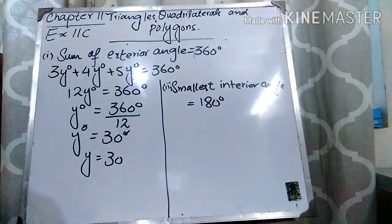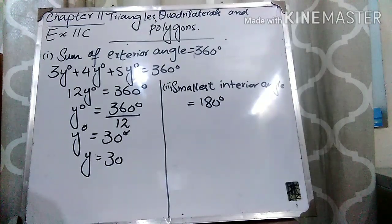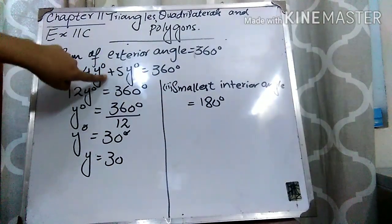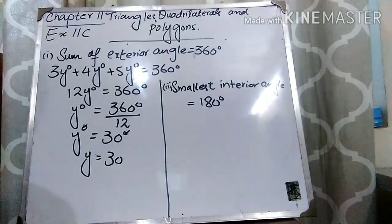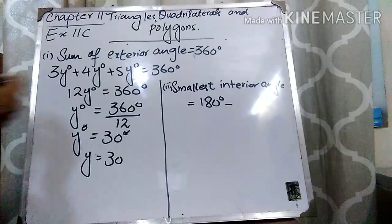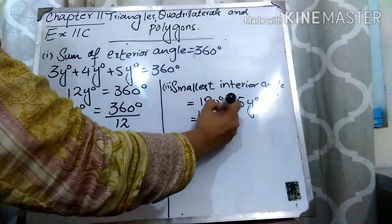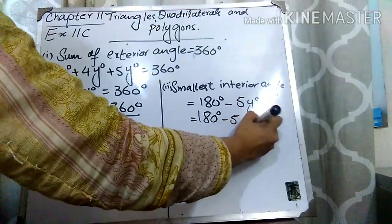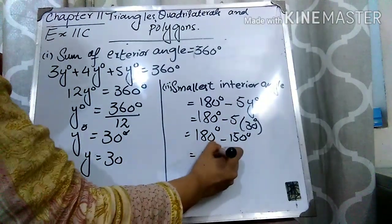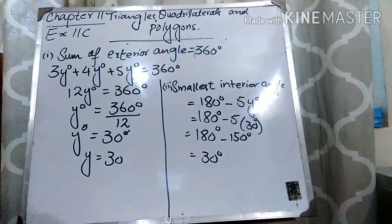For the second part, find the smallest interior angle. To find an interior angle, subtract its corresponding exterior angle from 180°. To get the smallest interior angle, subtract the largest exterior angle from 180°. The largest exterior angle is 5y. With y = 30, 5y = 150°. So the smallest interior angle = 180° − 150° = 30°.